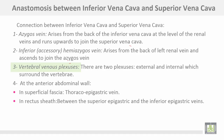The vertebral venous plexuses consist of two plexuses — external and internal vertebral plexuses — which surround the vertebrae. At the anterior abdominal wall, connections run through the superficial fascia via the thoracoepigastric vein, and within the rectus sheath between the superior epigastric and inferior epigastric veins.